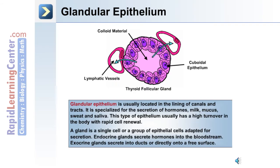Glandular epithelium is usually located in the lining of canals and tracts. Shown here in the image is a thyroid follicular gland, made up of cuboidal epithelium and a colloid material in the middle. The substances produced in this thyroid follicular gland are secreted into the lymphatic vessels. Glandular epithelium is specialized for the secretion of hormones, milk, mucus, sweat, and saliva, and this type of epithelium usually has a high turnover in the body with rapid cell renewal.